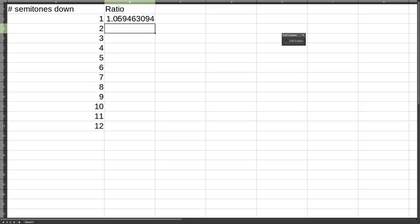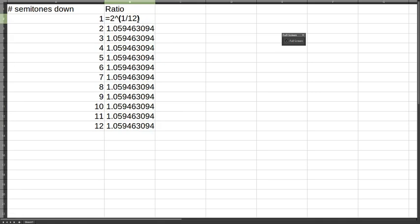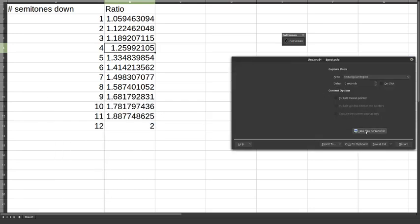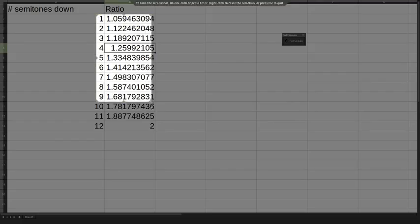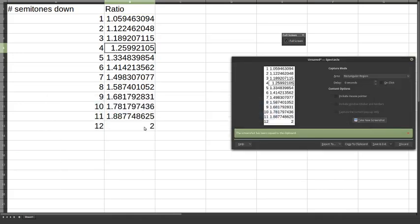So we can see that these are the ratios that we would have to multiply our string gauge by to find a new string gauge with equivalent tension.